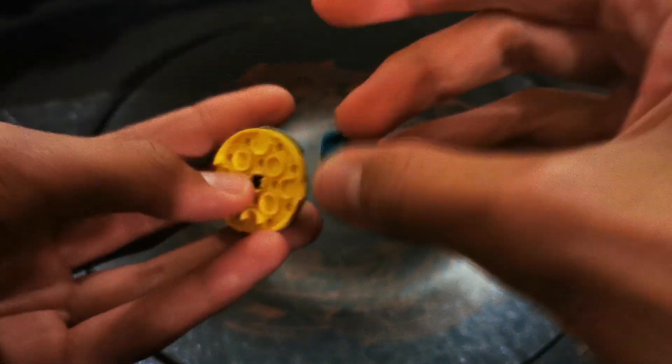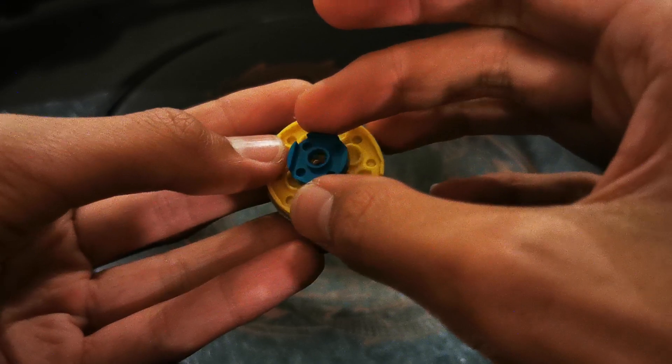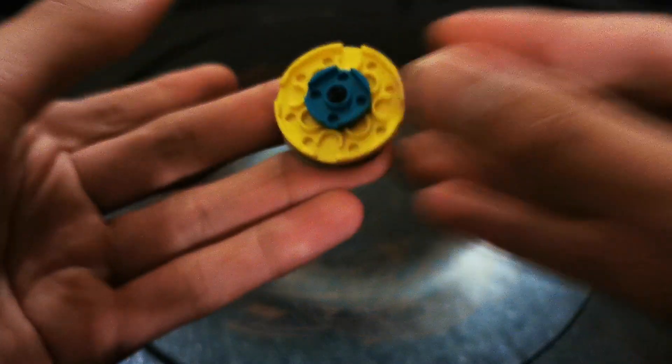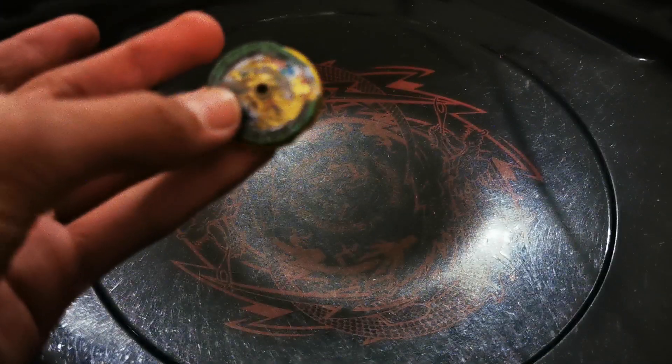Then grab a 2x2 circular tile in any colour and put it there. And that's the chip done.